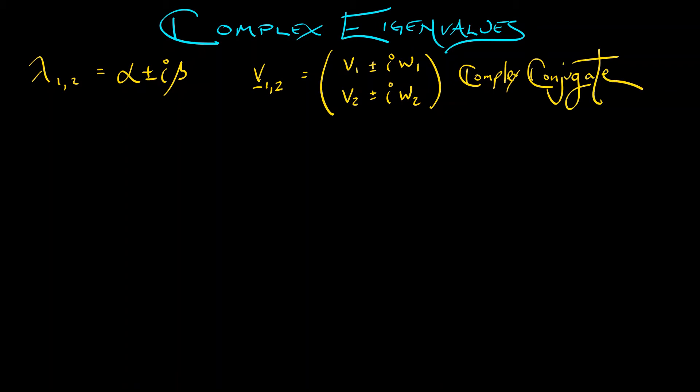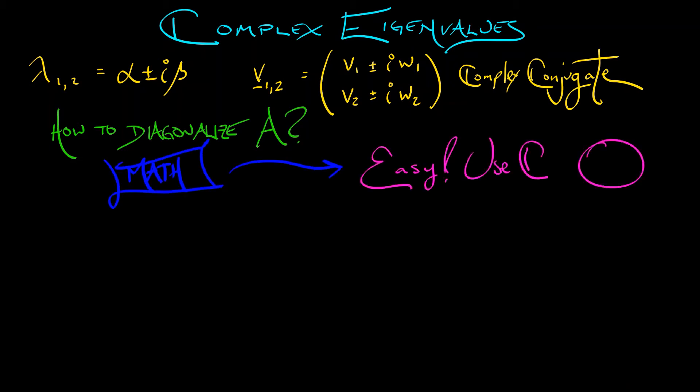Now, what we want to do is diagonalize the matrix A so that we can take powers, take exponentials, things like that. You talk to a mathematician, they're like, easy. This is diagonalizable. Just use the field of complex numbers. Boom. Done.